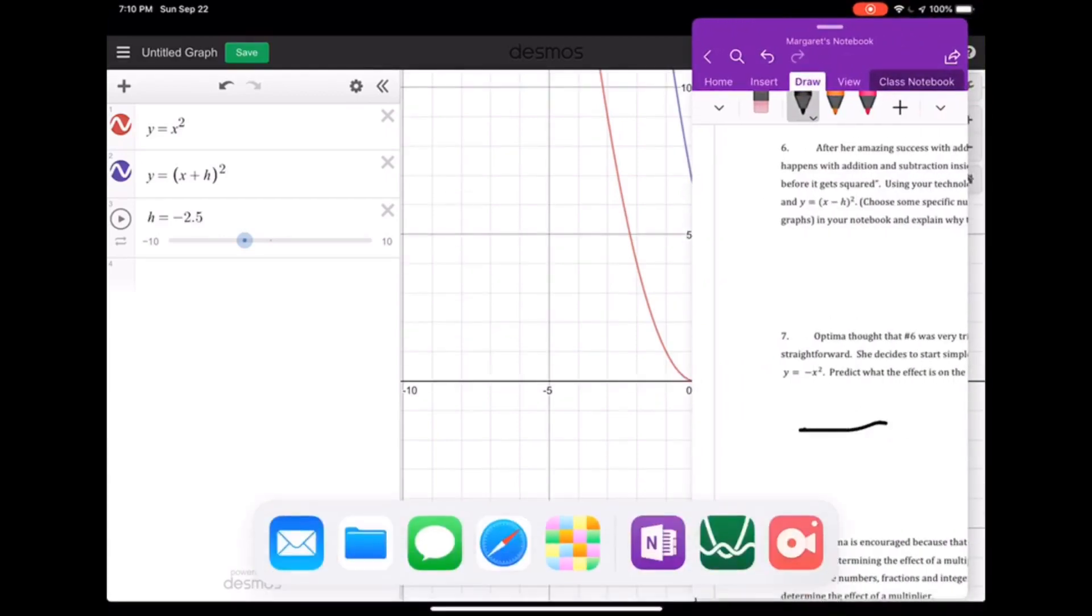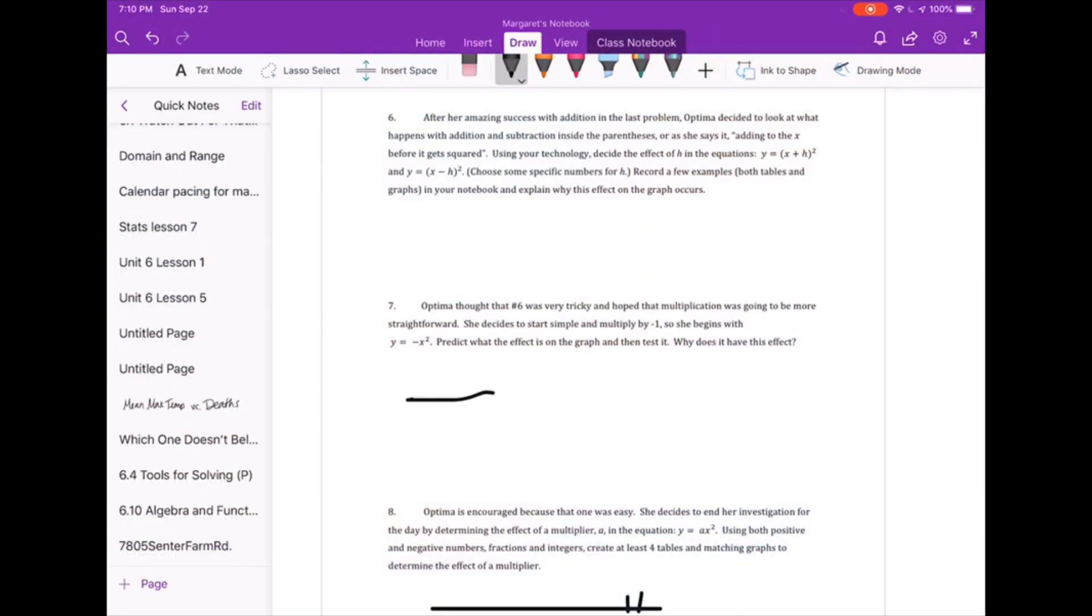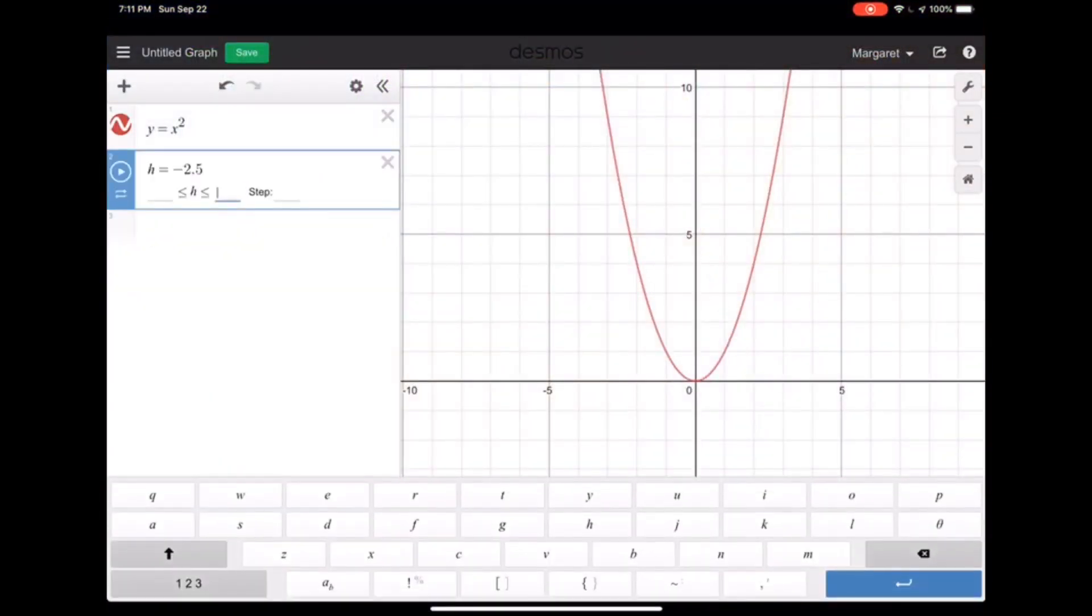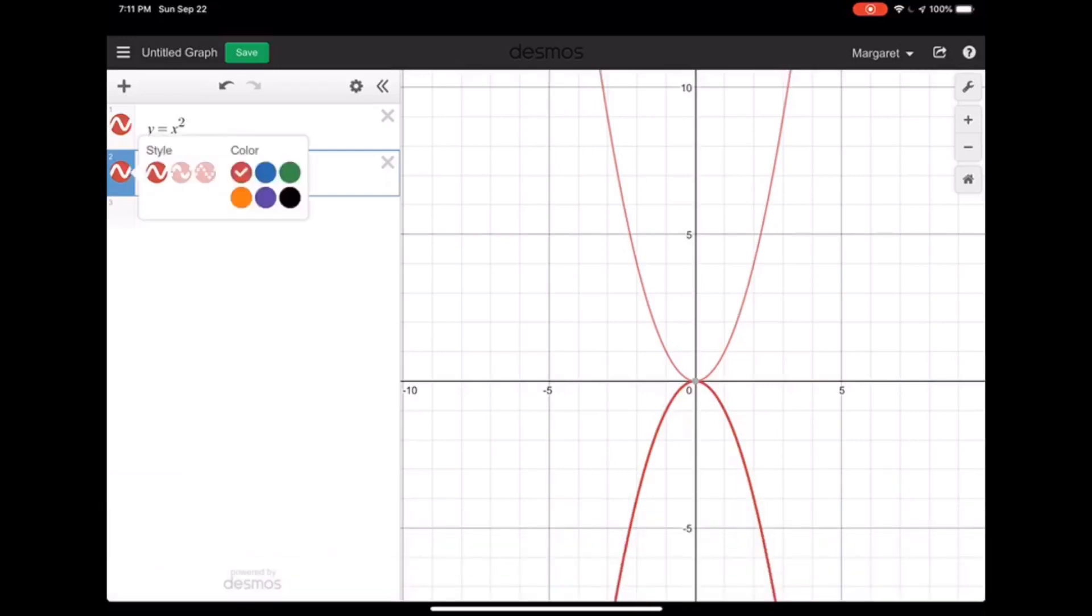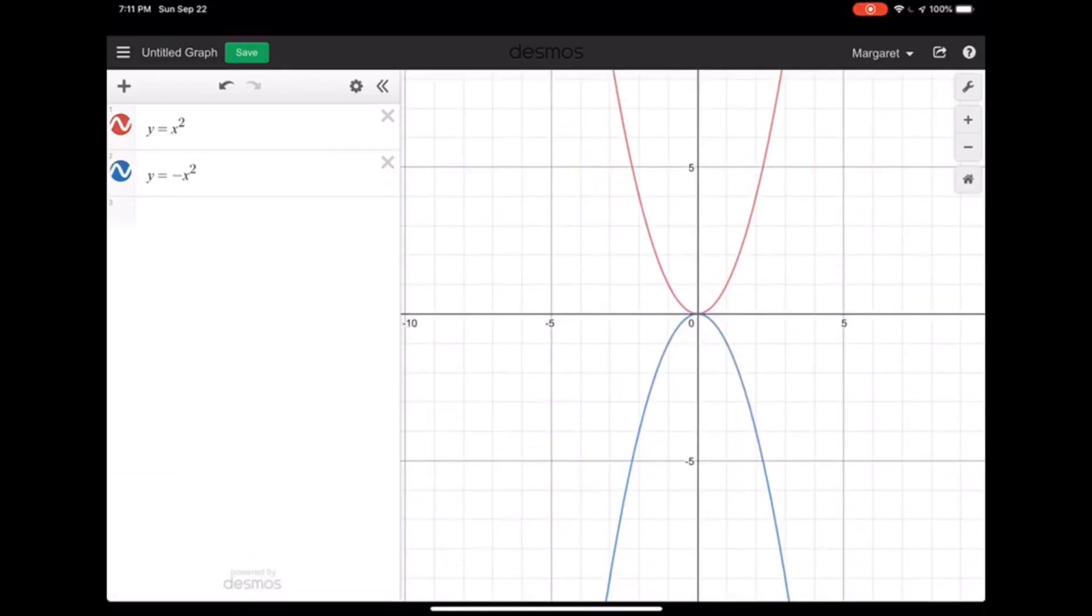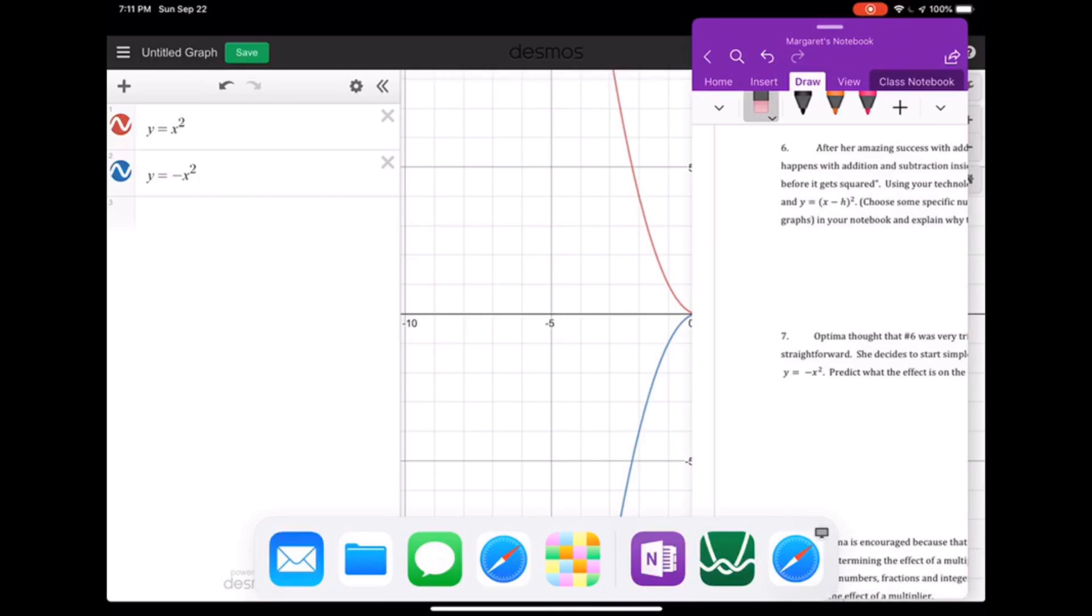Looking at number 7, we are going to try multiplication. So it asks you to predict what you think will happen, so do that right now. And then we're going to go test it. So again, we're going to keep our initial in here. And in a second line, type in our y equals negative x squared. And we'll see, and I want this to be a different color, so I'm going to change the colors. And you see that it's a reflection over the x axis. So that's what's happening with our negative x squared here. So you can write down that description, and then we'll move on to number 8.